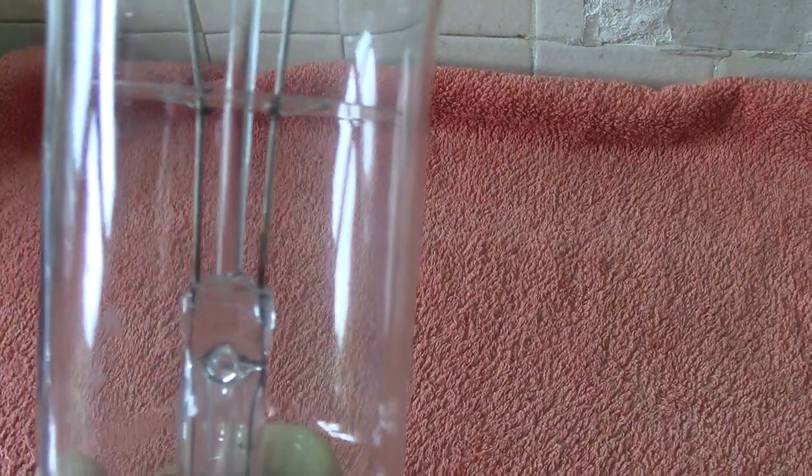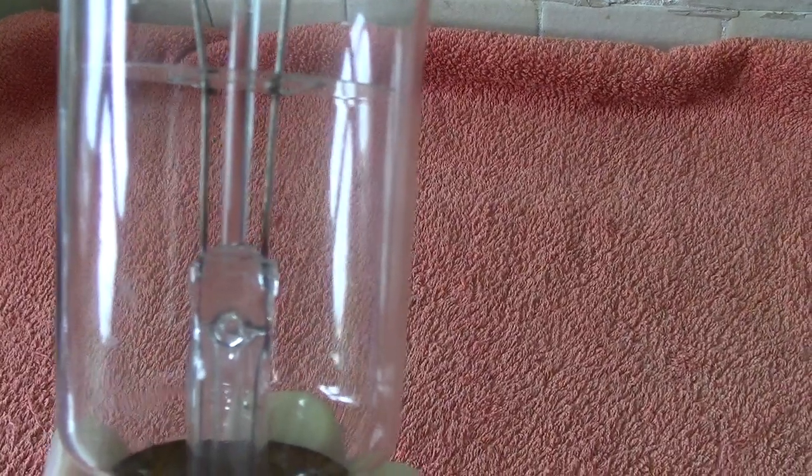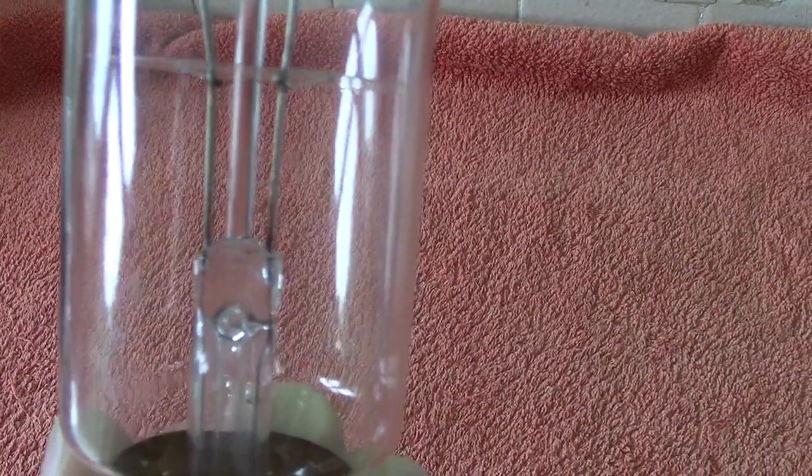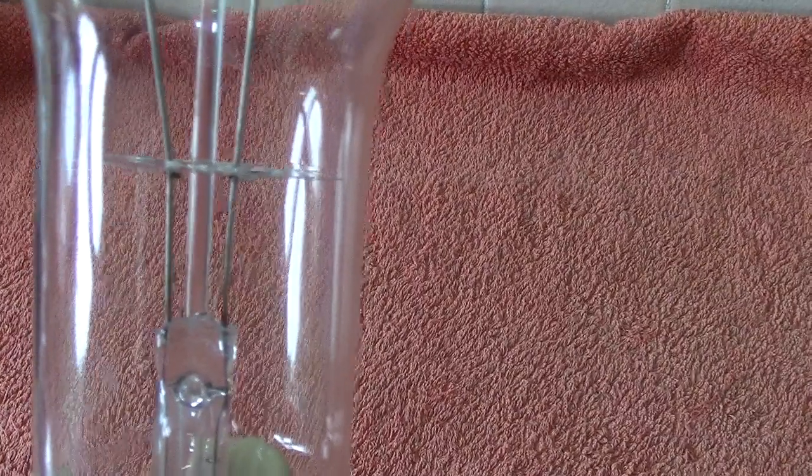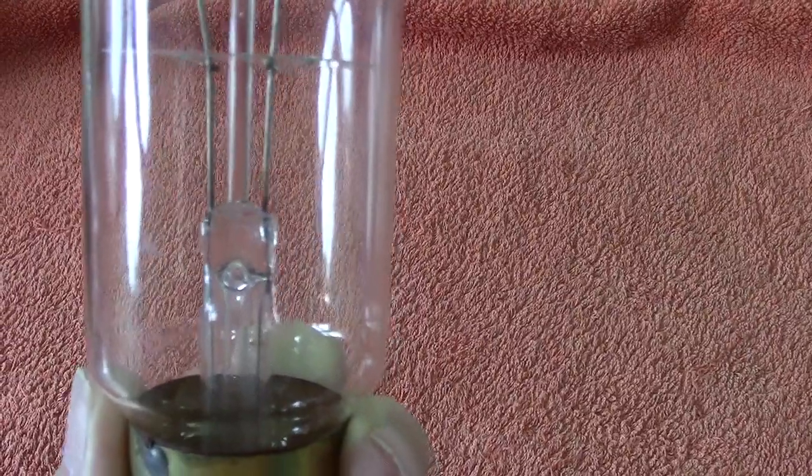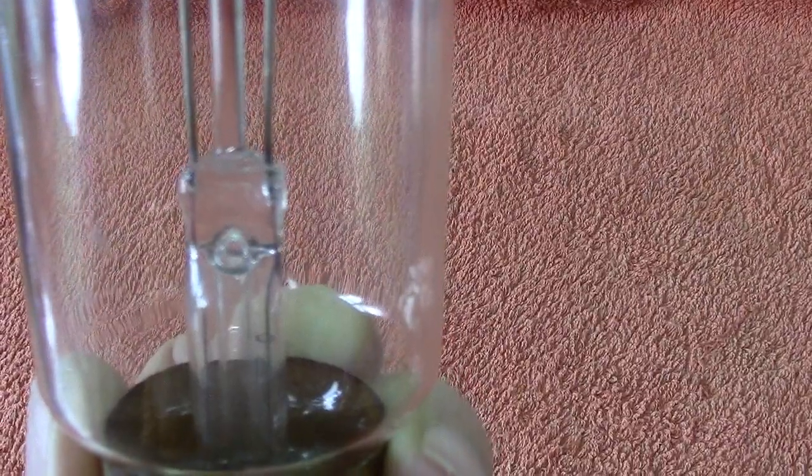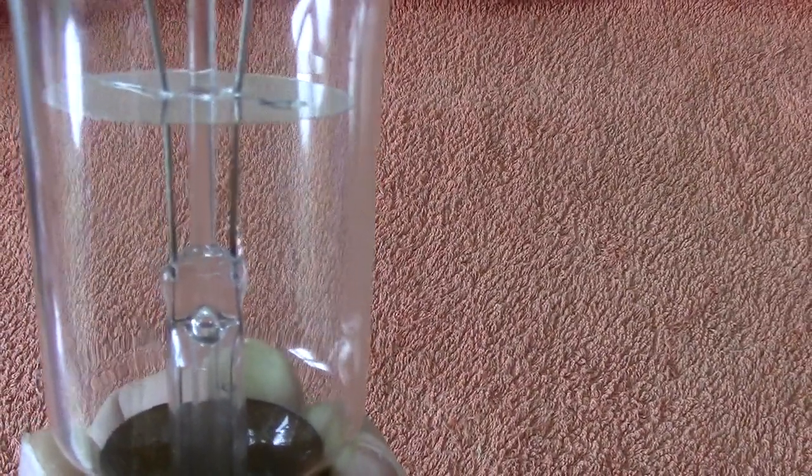The pinch is that part there and that contains nickel iron alloy which expands the same as glass. So as the bulb gets hotter, the metal leading wires would expand the same as the glass. That way, the vacuum would remain in there. The little hole you see there is the evacuation tube because these were evacuated and filled with nitrogen.